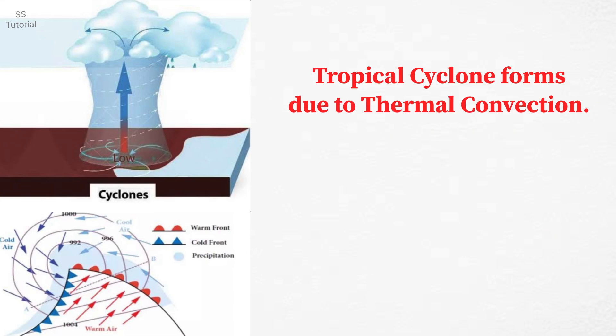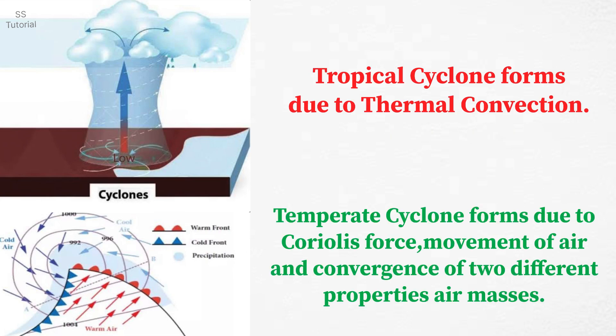Tropical cyclones form due to thermal convection. But temperate cyclones form due to Coriolis force, movement of air, and due to convergence of two different properties air masses.